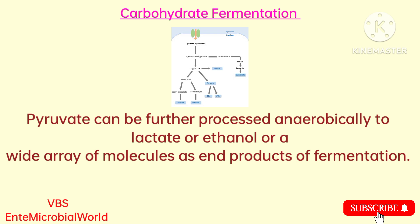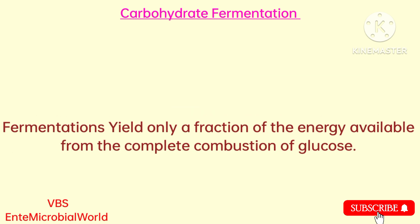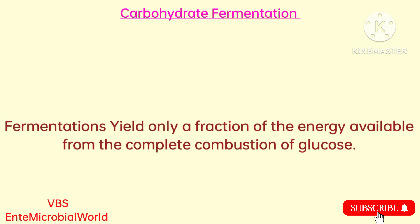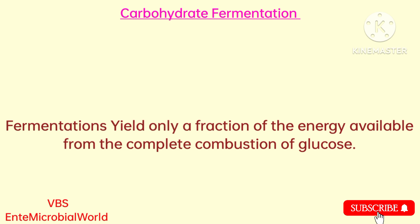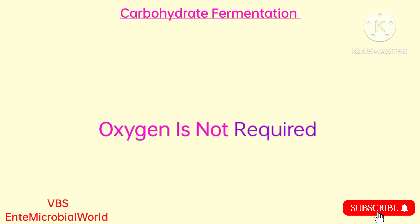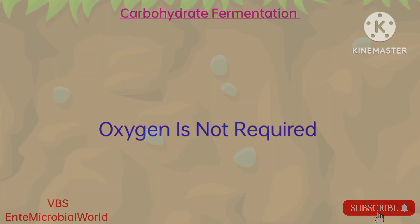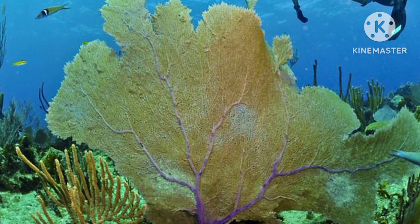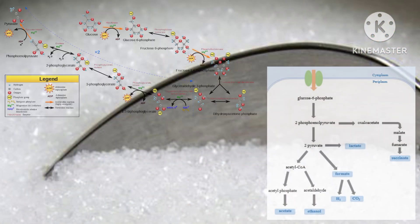Pyruvate can be further processed anaerobically to lactate, ethanol, or a wide array of molecules as end products of fermentation. Comparatively, fermentations yield only a fraction of the energy available from the complete combustion of glucose. Why is this relatively inefficient metabolic pathway so extensively used? The answer is simple: oxygen is not required. The ability to survive without oxygen helps organisms thrive in places like soils, deep water, and skin pores.